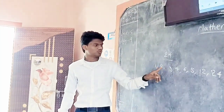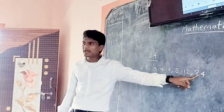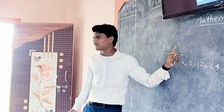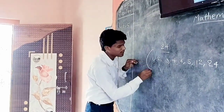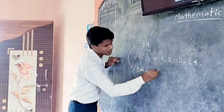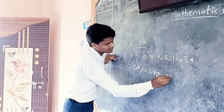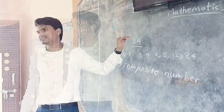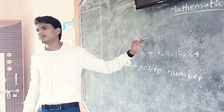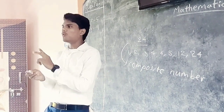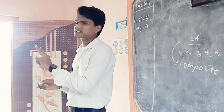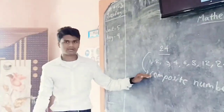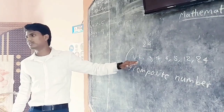Count all the numbers: 1, 2, 3, 4, 5, 6, 7, 8. We have 8 factors of 24. So it is a composite number. If a number has only 2 factors, it is called a prime number. If a number has more than 2 factors, it is called a composite number. So 24 is a composite number. Do you understand?